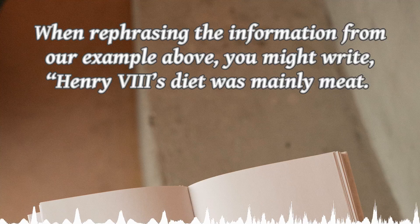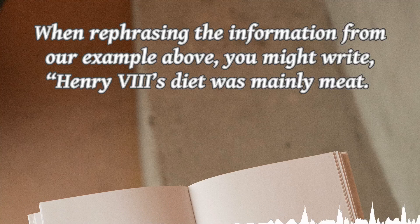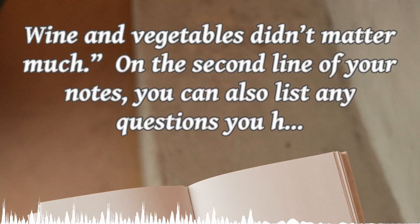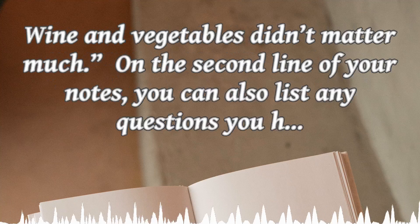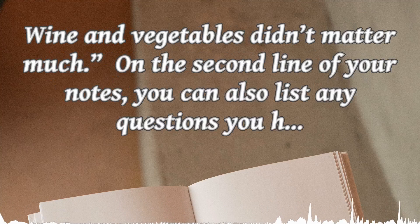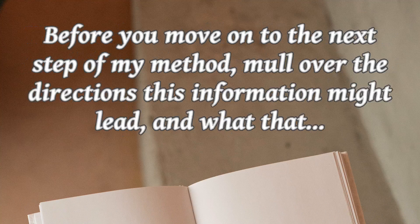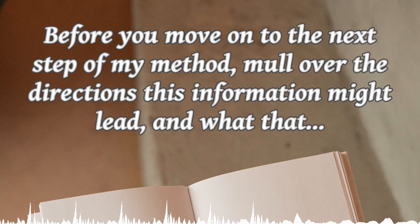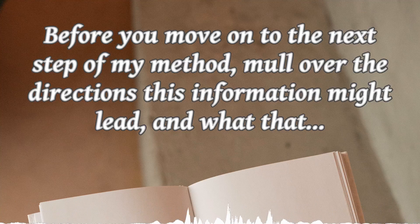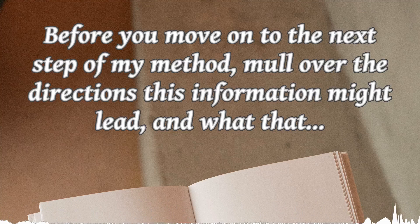When rephrasing the information from our example above, you might write: Henry VIII's diet was mainly meat. In those years, rich and noble people expected a lot of different meats and felt insulted when offered too little variety. Wine and vegetables didn't matter much. On the second line of your notes, you can also list any questions you have about the notes you took in step one — points of clarification or gaps in your knowledge that you feel you would need to form a complete picture.